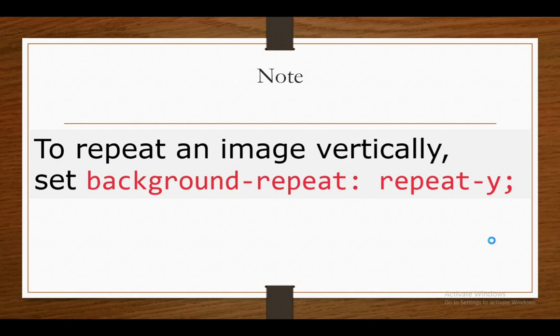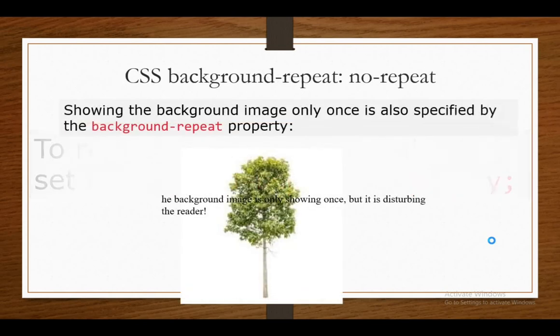For CSS background-repeat: no-repeat, the image will not be repeated. For example, if I have an image like a tree, you can use no-repeat to show the background image only once. This is also specified by the background-repeat property, with the value 'no-repeat'. This example shows the background image displayed only once.